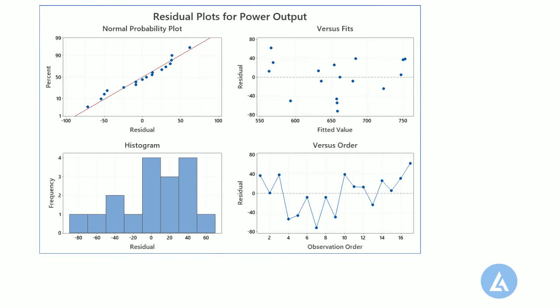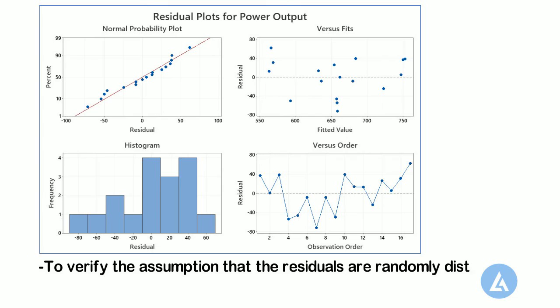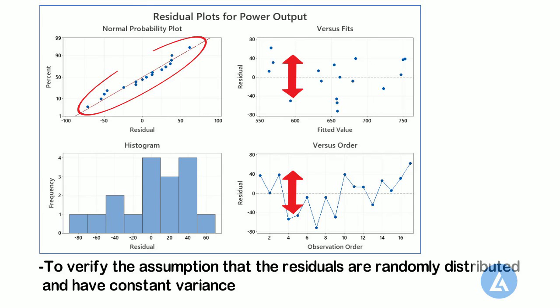Use the residuals versus fits plot to verify the assumption that the residuals are randomly distributed and have constant variance. Ideally, the points should fall randomly on both sides of zero with no recognizable patterns in the points. In our example, there is no such pattern, indicating that the residuals are randomly distributed and have constant variance.